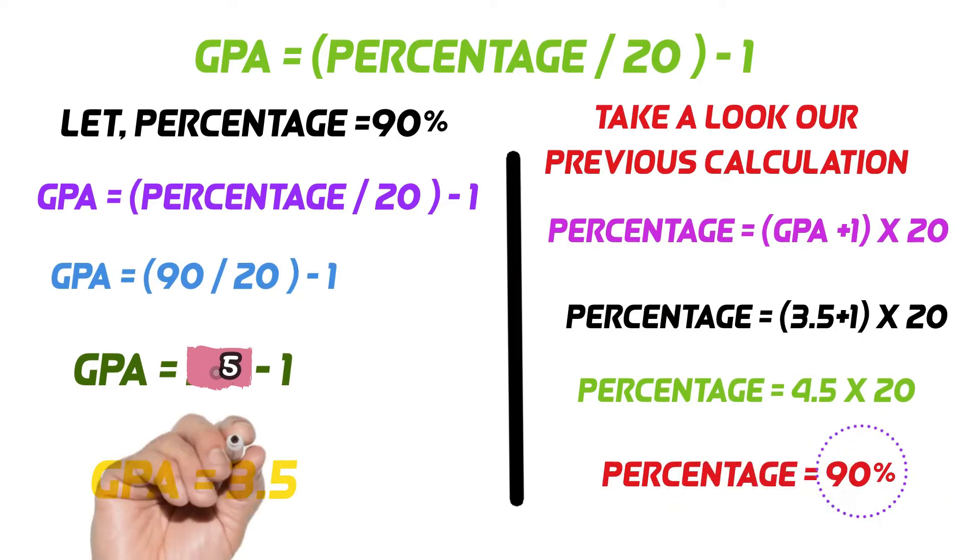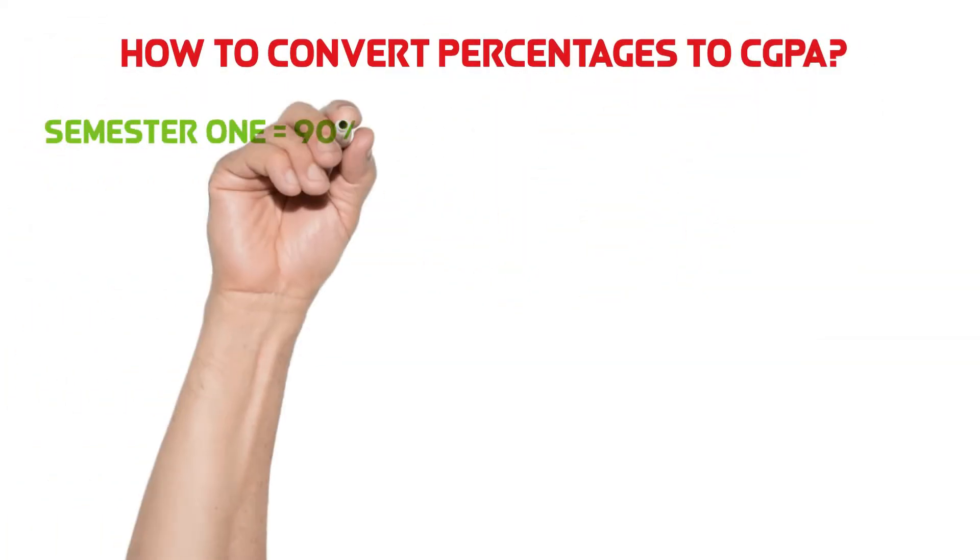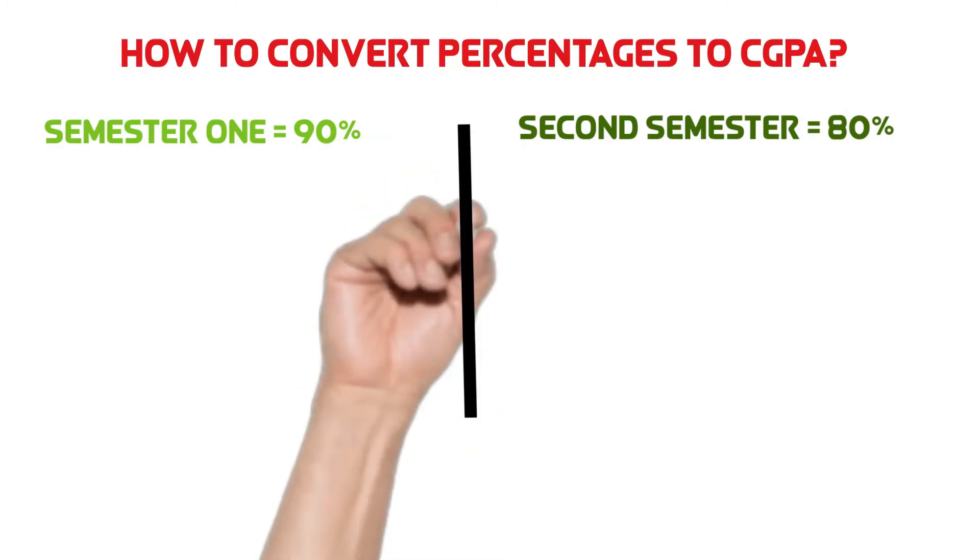If you take notice, we use 3.5 GPA in our first example. Let's say, we have a percentage in semester 1 as 90% and 80% in the second semester.